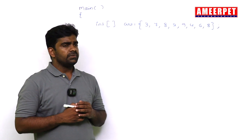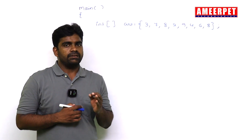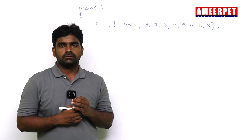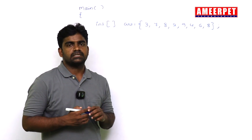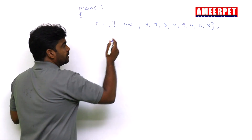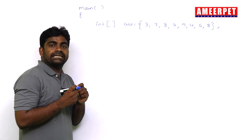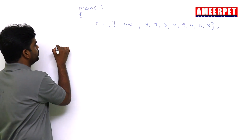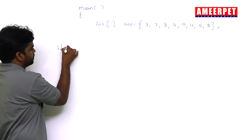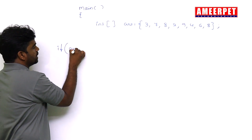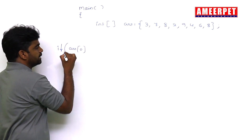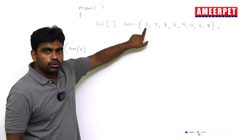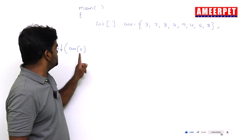The first question is: check whether the first element in the array is an even number or not. We already know that the first element of an array is always at index zero, so we access it directly. arr[0] gives us the element 3.